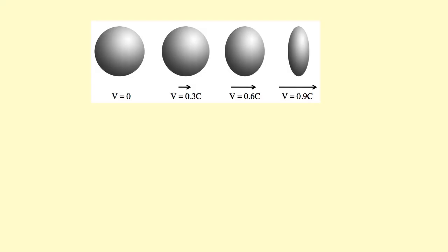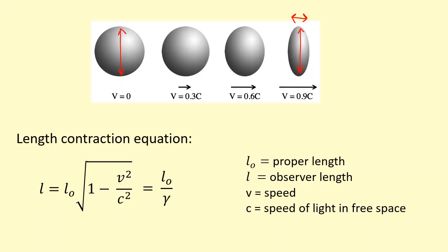Length contraction is when the width of an object appears to be narrower in the direction it's moving in. The height of the object doesn't change unless it's moving in that direction. Here's the length contraction formula, and as you can see, you've still got that Lorentz factor gamma.